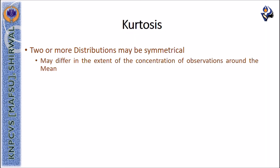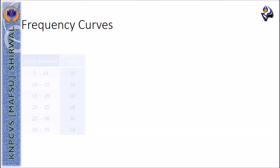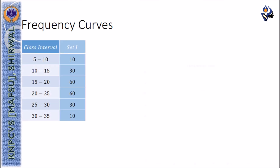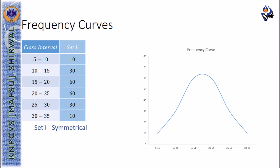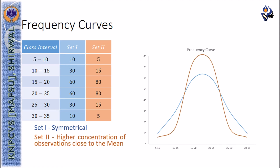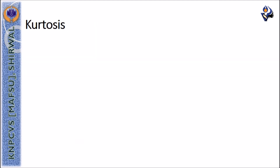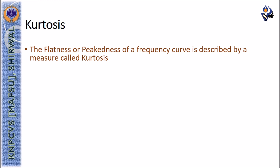Two or more distributions may be symmetrical; however, they may differ in the extent of concentration of observations around the mean. For example, with three given data sets: the first data set appears symmetrical, the second data set exhibits higher concentration of observations close to the mean, while the third data set displays even distribution of observations. The flatness or peakedness of a frequency curve is described by a measure known as kurtosis.